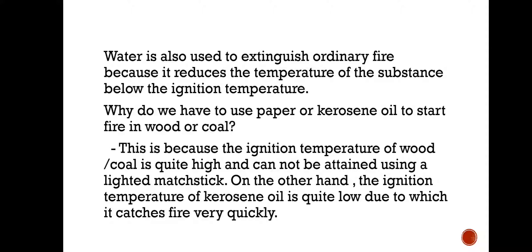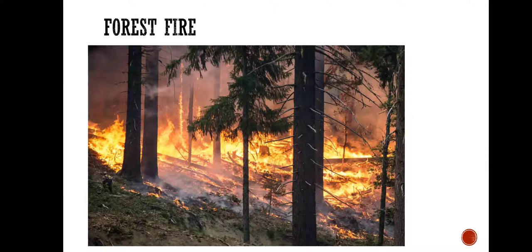Children, write this down — this will be your homework: why do we have to use paper or kerosene oil to start fire in wood or coal? Next is the forest fire. You must have read in the newspaper or seen in the news that forest fire occurs during the summer season. In summer, the grasses or leaves dry out, and when the air causes them to rub against each other, there is friction. As the normal temperature is already high, they attain the ignition temperature very easily. The dried leaves and grasses rub each other through the wind, friction develops, and they attain the ignition temperature, causing fire to take place.